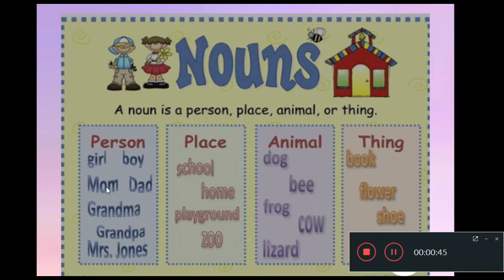When we refer to a place, we can say school, home, playground, zoo. For an animal, it could be dog, bee, frog, cow. And for a thing, we have examples such as book, flower, computer. Remember, guys, I told you that we have a lot of nouns around us, but most of them we can say in singular.